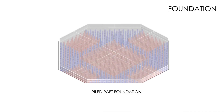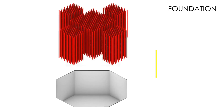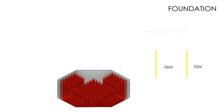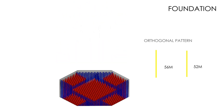The foundation of the tower is a piled raft type foundation made of a 6-meter deep raft slab supported by piles. The piles are 56 meters deep in the core area and 52 meters deep in the extension area. They are arranged in a staggered pattern in the load-concentrated areas and in an orthogonal pattern in other areas.